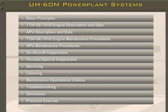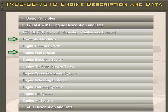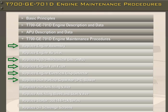Now that we've covered the basics of the T700-GE-701, you need to complete the following sections under T700-GE-701 Delta Engine Description and Data: power plant modules, engine fuel system, engine electrical system, engine oil system, and engine air system. Once those are completed, you'll complete the T700-GE-701 Delta Engine Maintenance Procedures for replacing the engine assembly, replacing the hydromechanical unit, replacing the engine fuel filter, replacing the engine electrical chip detector, replacing the inlet particle separator, and replacing the starter.